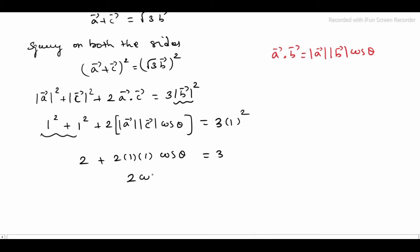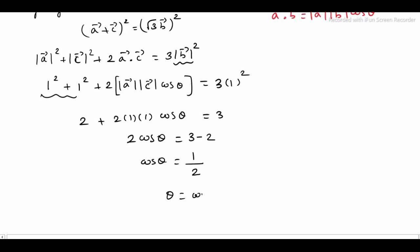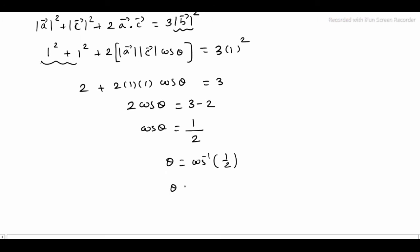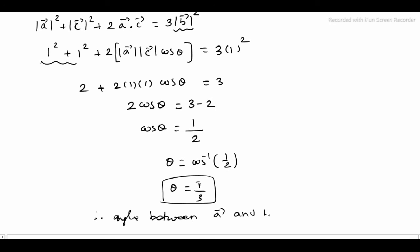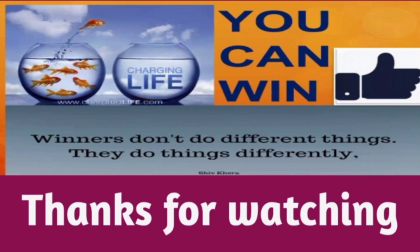So, 2 plus 2 cos theta equals 3. Moving 2 to the right side: 2 cos theta equals 3 minus 2, which is 1. Therefore cos theta equals 1 divided by 2. So theta equals cos inverse of 1 by 2. We know that cos 60 degrees equals 1 by 2, which is pi by 3. So the angle between A vector and C vector is 60 degrees.